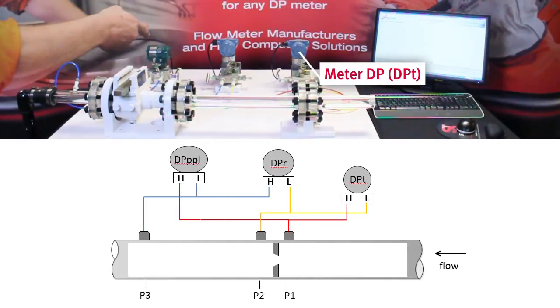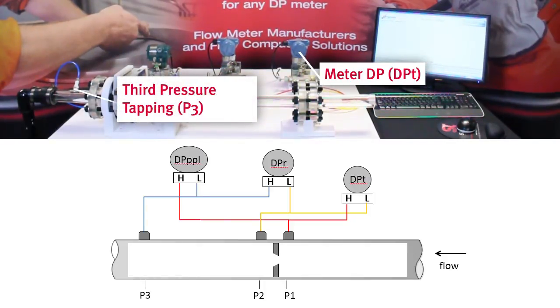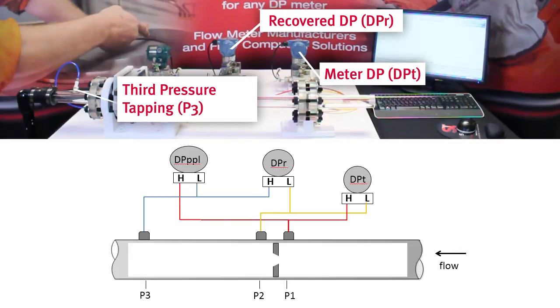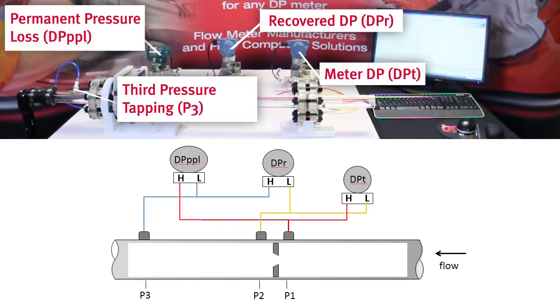However, with an additional pressure tapping downstream of the meter, we can read not just the traditional meter DP but also the recovered DP and the permanent pressure loss.